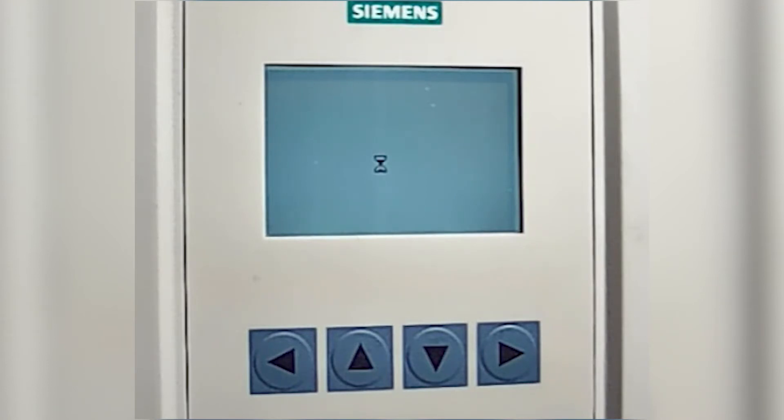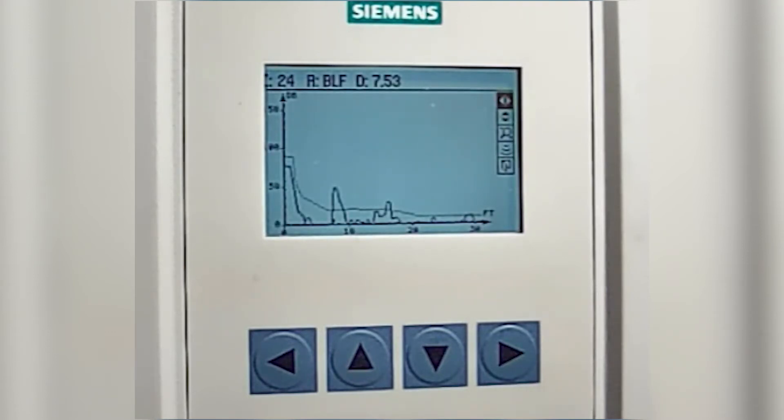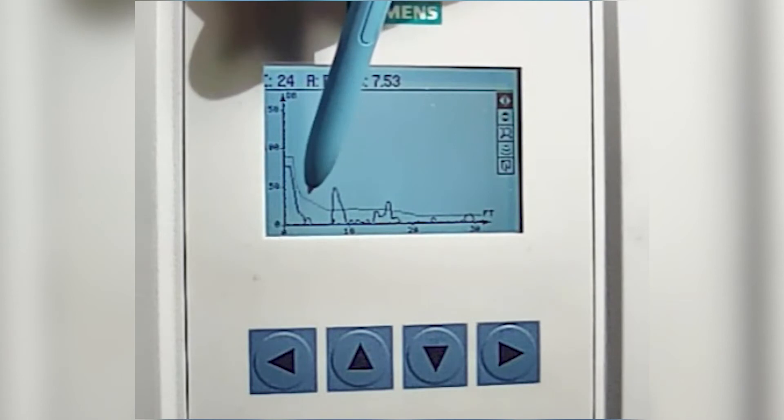This will take a couple seconds for the Echo Profile to appear. And there it is. What you'll see here is the TVT line, which is this dotted line.